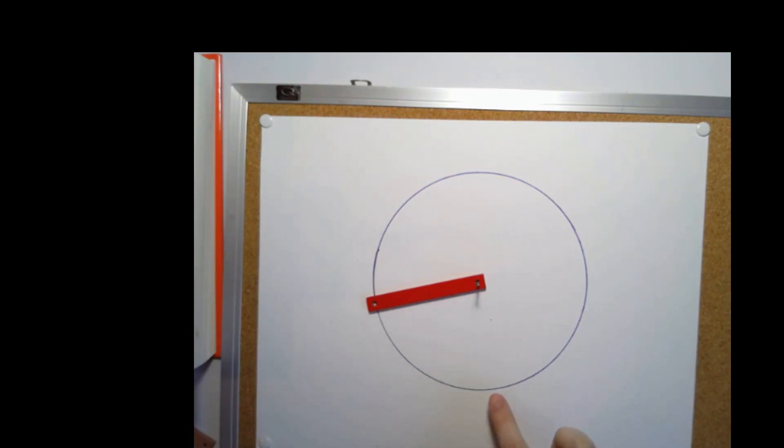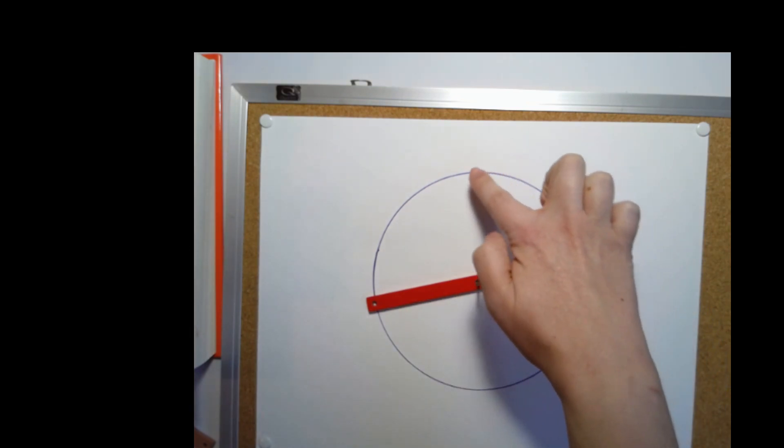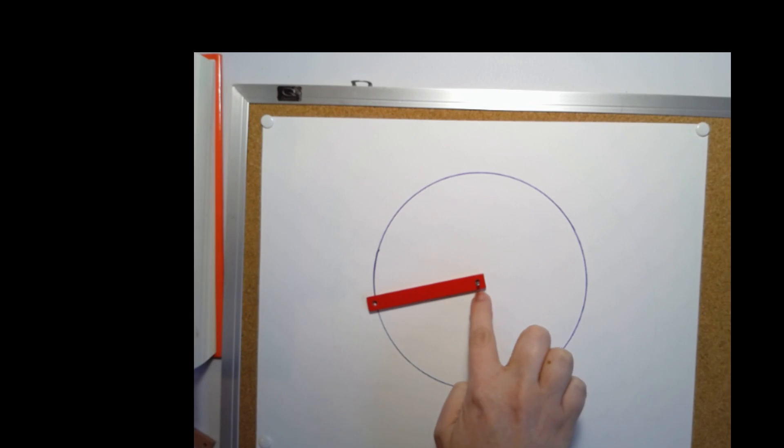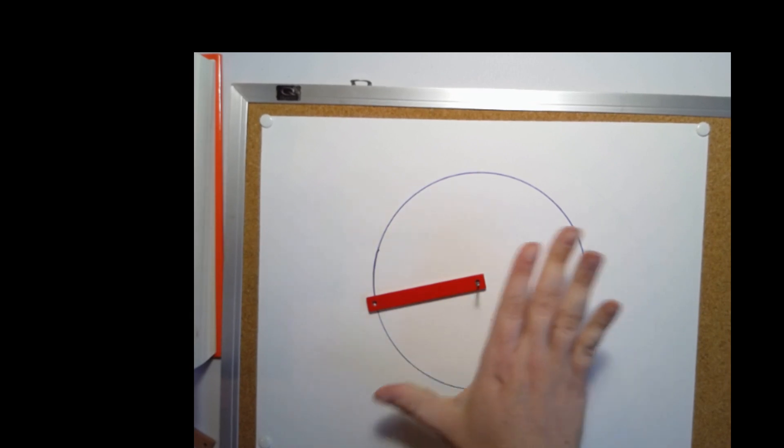This outer part here where I drew my line, that is called the circumference. And this part in the very middle is called the center. So the whole circle is called the area or the surface.